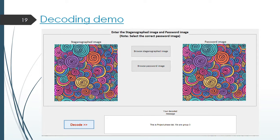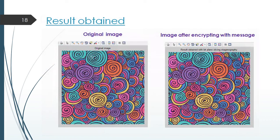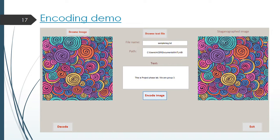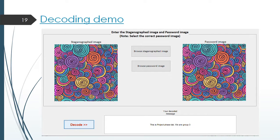This is the decoding screenshot of our application. On the left hand side there is the encrypted image or the steganographed image. And on the right hand side we have selected the correct password image. And when we press on the decode button it decodes the message correctly. As you can see the message used in the encryption and decryption are same. The message says that this is project phase lab via group 3. This is the message that was used during encryption and the message received during decryption is also same. So this is indicating that the decryption algorithm is working.